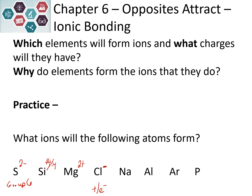Sodium is in column one, so it is going to want to lose one electron and become positively charged, because now it has more protons than electrons. Aluminum is in column three and becomes a plus-three. Argon is in the eighth column — it has eight valence electrons, so it will gain no charge; it wants to be neutral. Phosphorus is in column five and needs to gain three electrons to have eight. Another way to think about it is that it needs to move three boxes over to the noble gas.